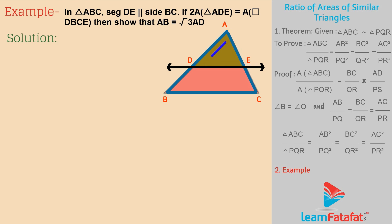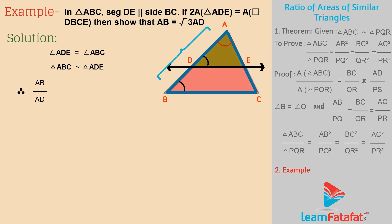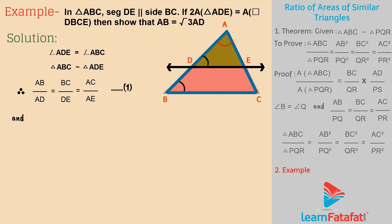Solution: Consider triangle ABC and triangle ADE. Angle ADE is equal to angle ABC. Angle A is a common angle. So triangle ABC is similar to triangle ADE. Therefore, AB divided by AD is equal to BC divided by DE is equal to AC divided by AE. This is equation 1. And area of triangle ABC divided by area of triangle ADE is equal to AB square divided by AD square is equal to BC square divided by DE square is equal to AC square divided by AE square. This is equation 2.